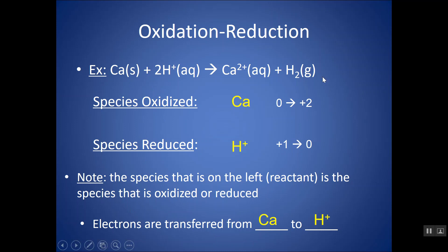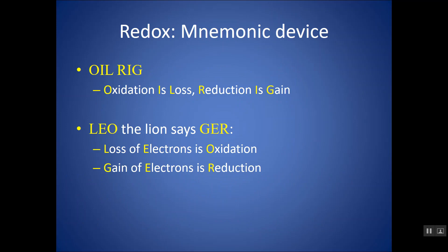This was easy to do because it's a net ionic equation, but sometimes we might be looking at a molecular equation where charges are not so easily viewed. So we can do what's called finding oxidation numbers for those reactions. A good mnemonic device to remember for this chapter is OIL RIG — Oxidation Is Loss, Reduction Is Gain.